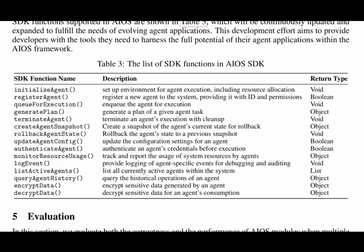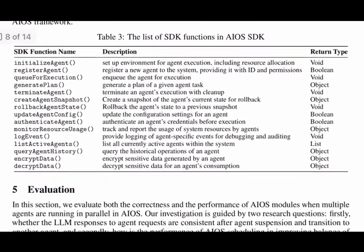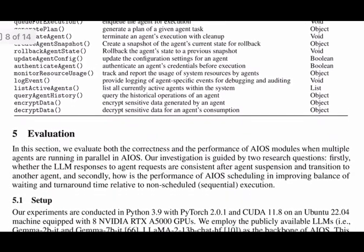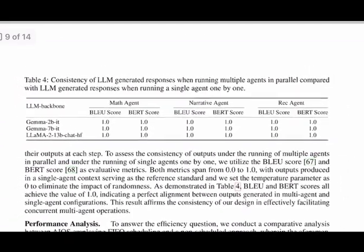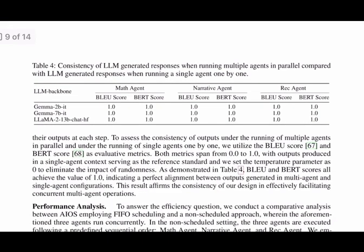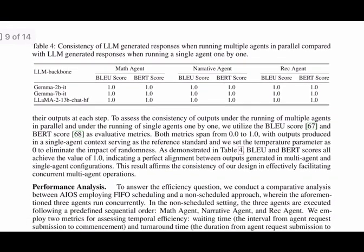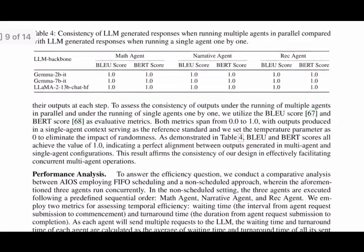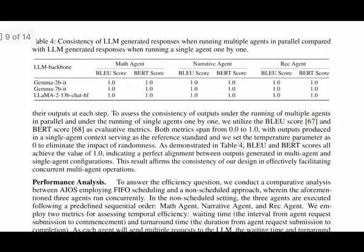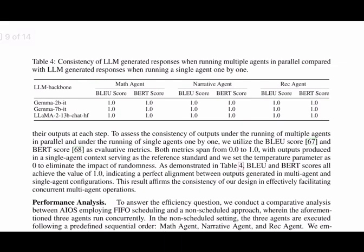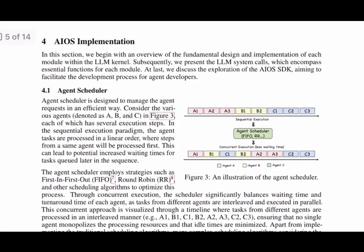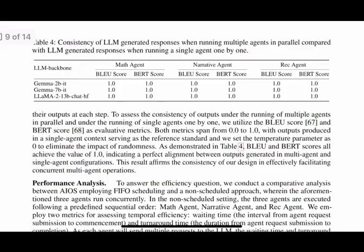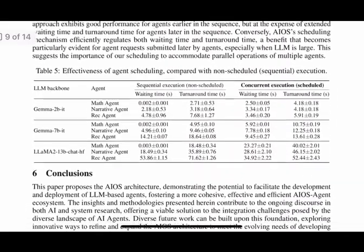The team evaluated AIOS on two fronts: consistency and performance. They ran three agents concurrently — a math agent, narrative agent, and recommendation agent — to see how AIOS handles multiple agents in parallel. For consistency analysis, comparing responses from single agents versus concurrent agents using BLEU and BERT scores, they found perfect consistency. For performance, comparing AIOS with FIFO scheduling against non-scheduled sequential execution, they showed that AIOS greatly reduced waiting and turnaround times, especially as agent complexity increased.